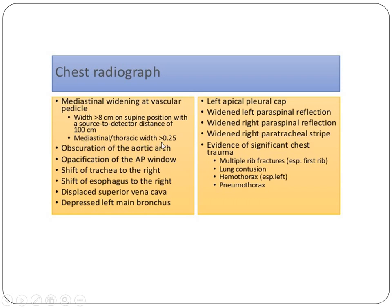Additional chest X-ray findings include mediastinal-to-thoracic width ratio greater than 0.25, obscuration of the aortic arch, opacification of the aortopulmonary window, shift of the trachea and esophagus to the right, displacement of the superior vena cava, depressed left main bronchus, left apical pleural cap, widening of the left and right paraspinal reflections, and widening of the right paratracheal stripe. There may also be evidence of significant chest trauma such as multiple rib fractures especially the first rib, lung contusion, hemothorax especially on the left side, and pneumothorax.